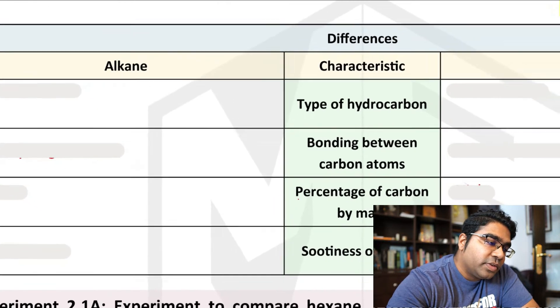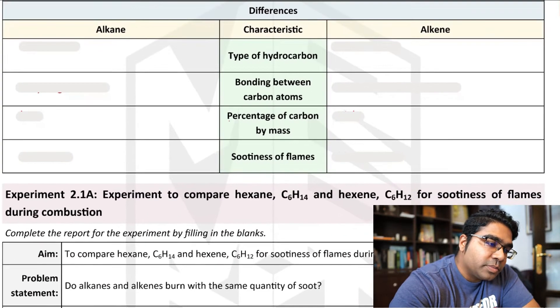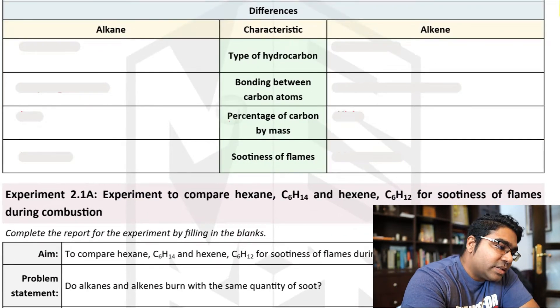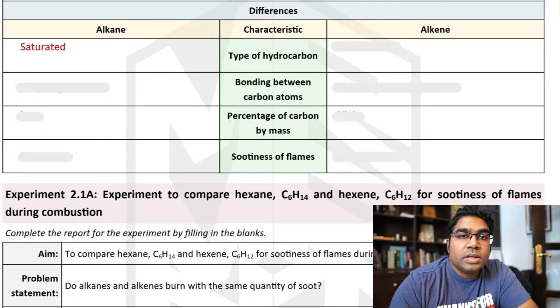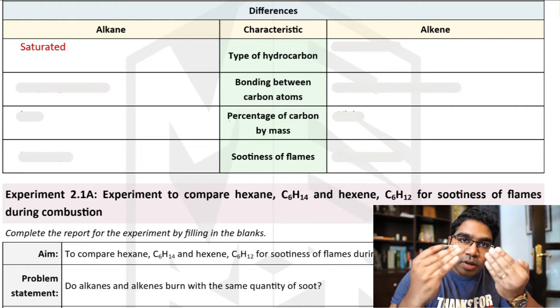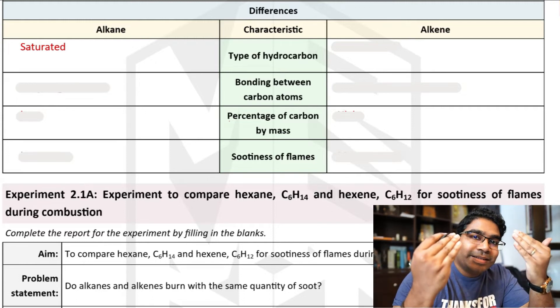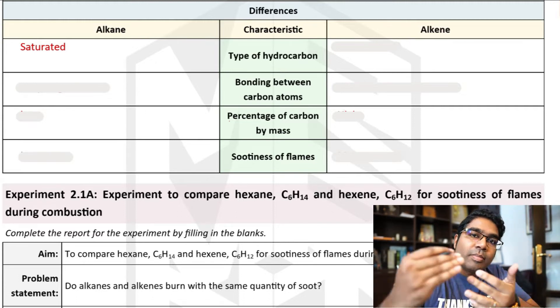Now the differences. The types of hydrocarbon. Alkane is a saturated hydrocarbon. This is because there is no more room for any atom to form a new bond unless the existing bonds are broken.